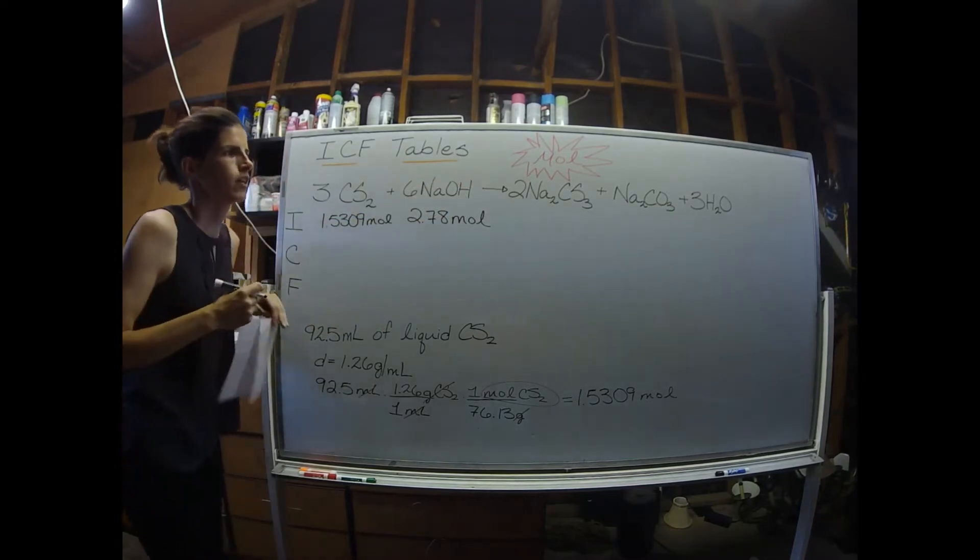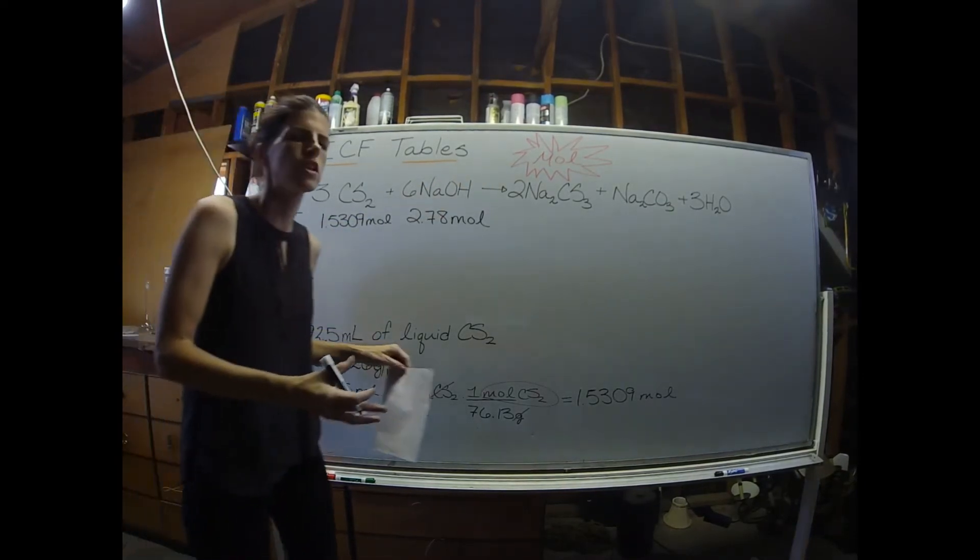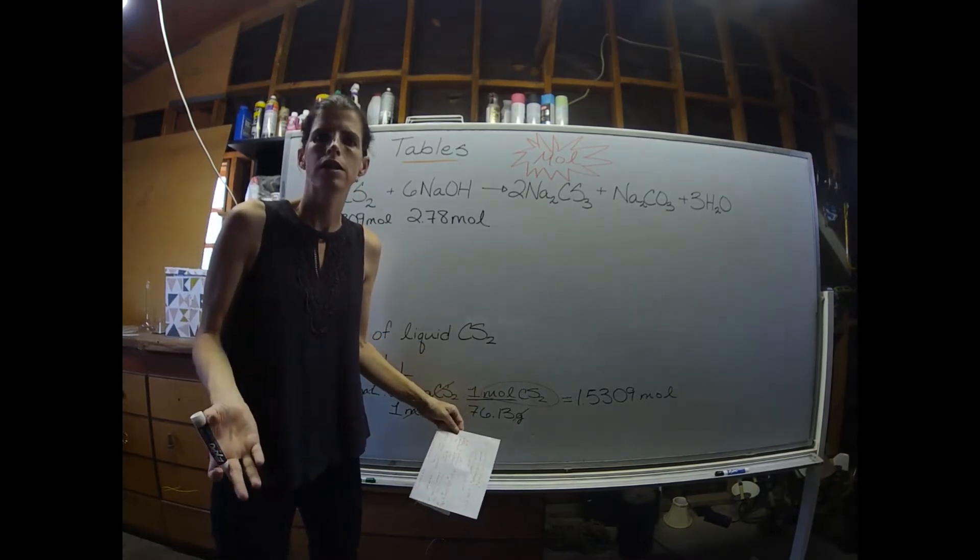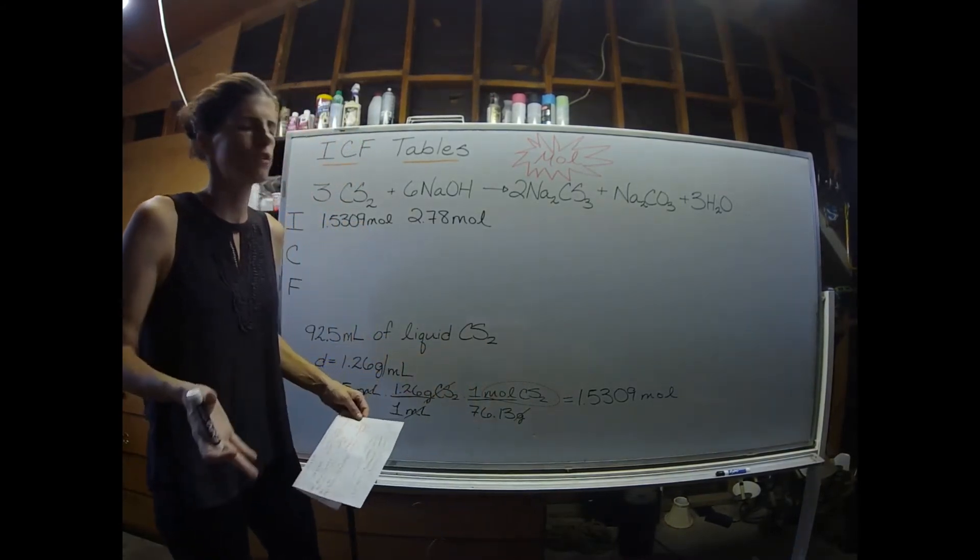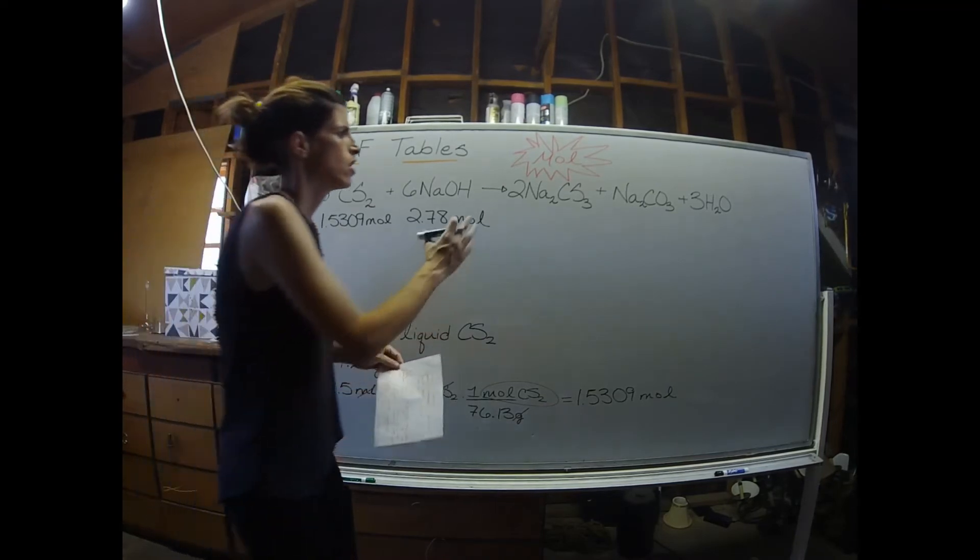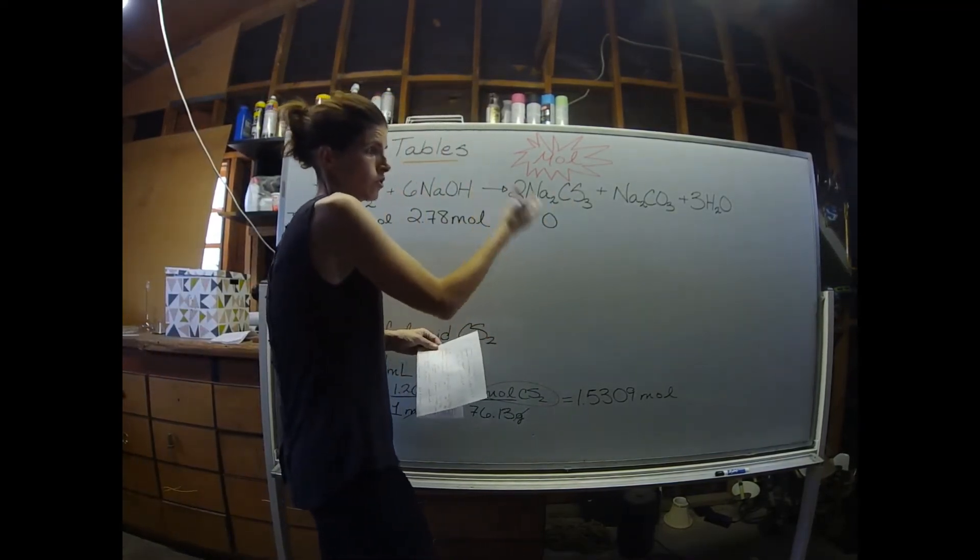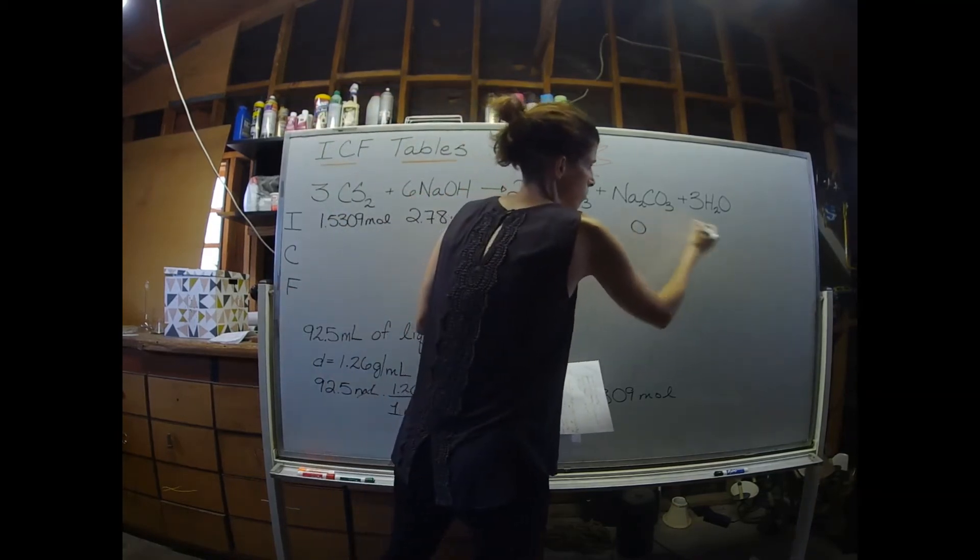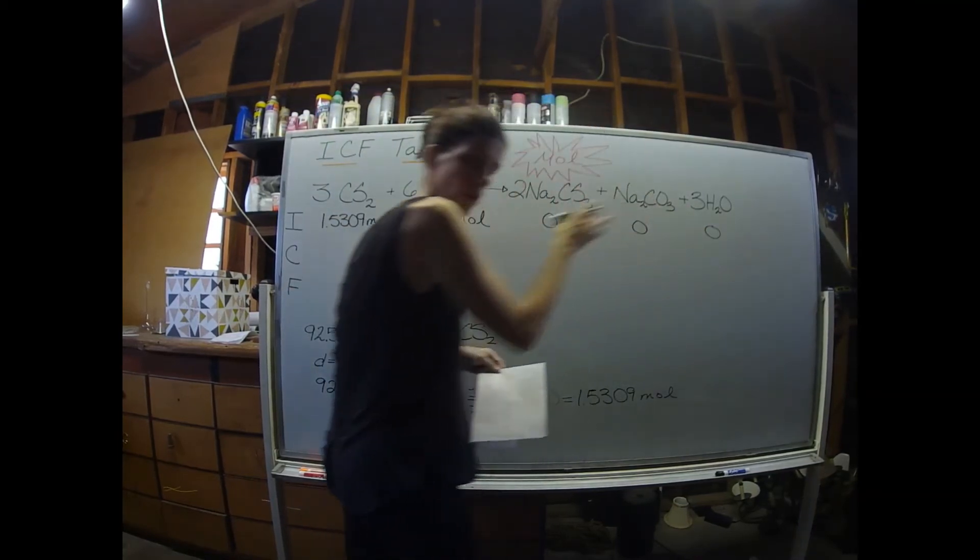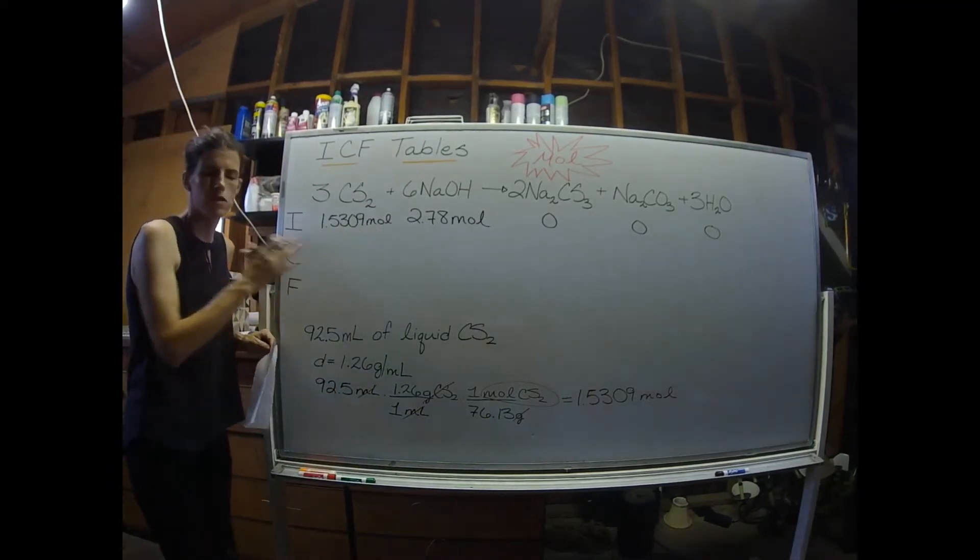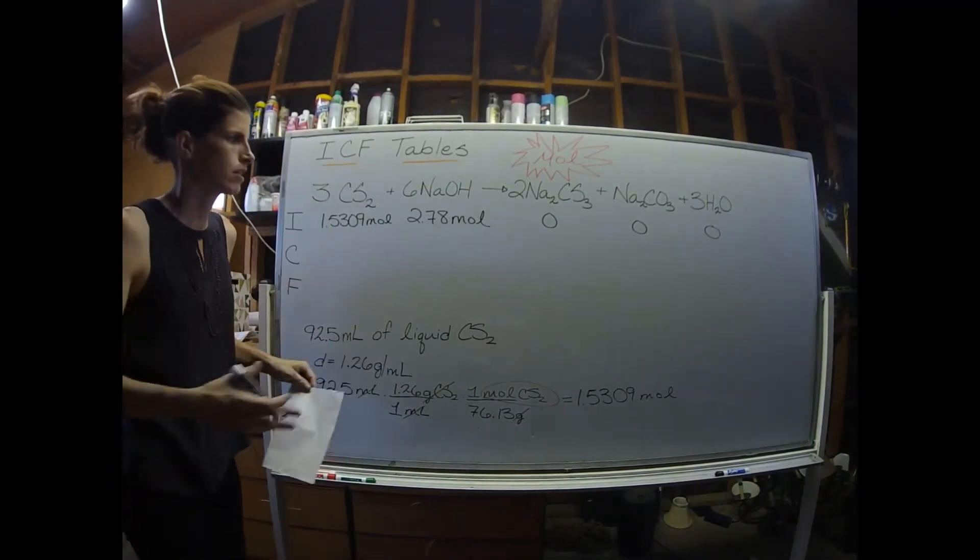Let's think about over here. So initially, before the reaction begins, we don't have any product. I mean, that's usually the point of the reaction, to make product. So over here, we're going to have zeros - zero moles, zero moles, and zero moles of all three products. And I wrote moles here. As long as you're remembering to use moles, you don't have to keep on writing moles.